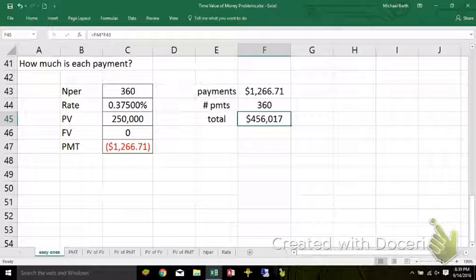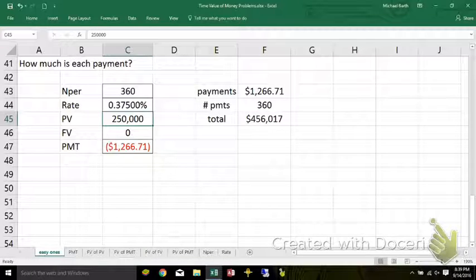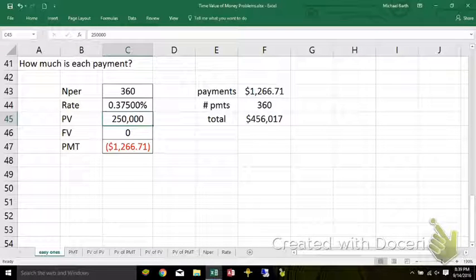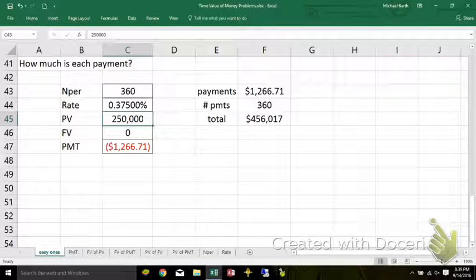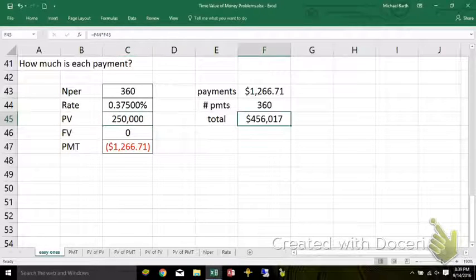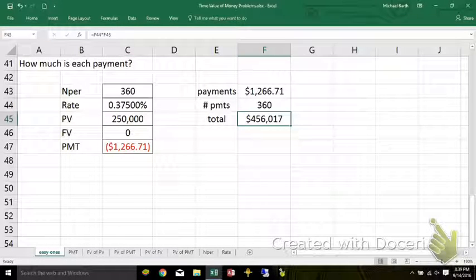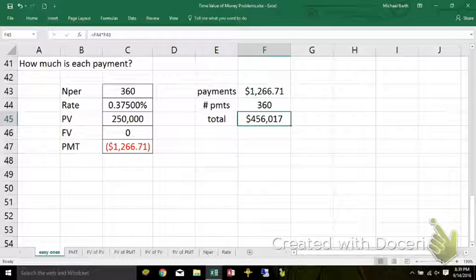How much of that is interest? Everything over and above the amount they gave me. They gave me $250,000. I gave them back $456,017. Then about $216,000 of it is interest.